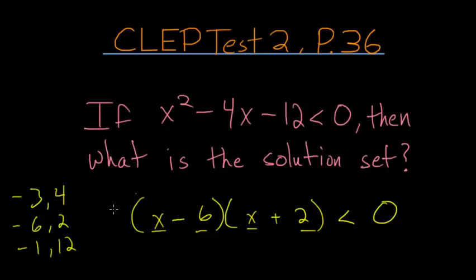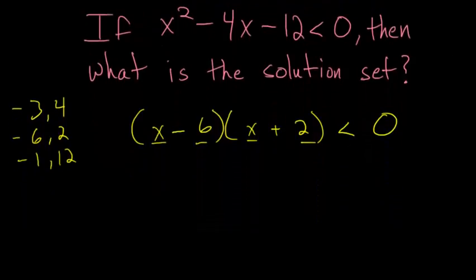To figure out when this quadratic is less than 0, it might be easiest to first make a number line. That way we can get a better understanding about what's going on.